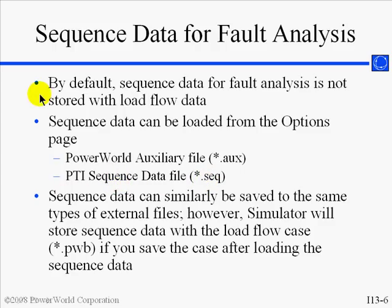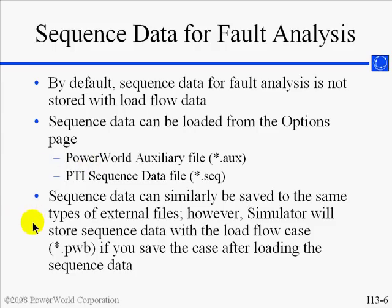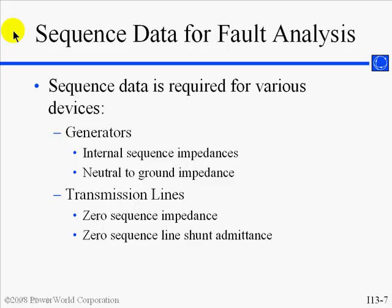The sequence data is normally not stored with the load flow data. However, if you save the PWB file from Simulator, then the sequence data will be stored. You can also save this data out to an auxiliary file from the Fault Options tab if you wish to use it with a different case. These slides describe the sequence data required for the different types of devices. In our example, we loaded this data from the aux file, but you can also enter it initially in the Model Explorer.